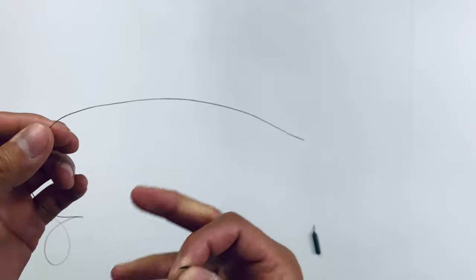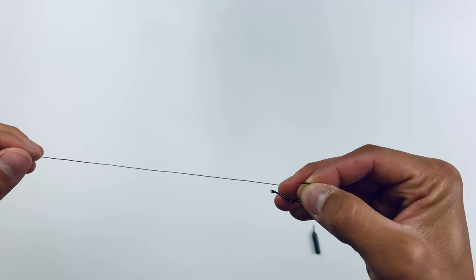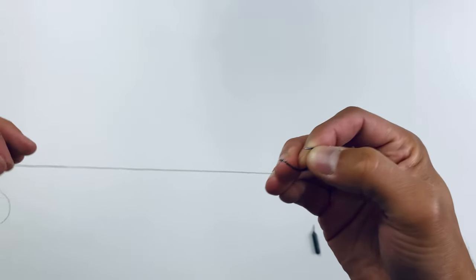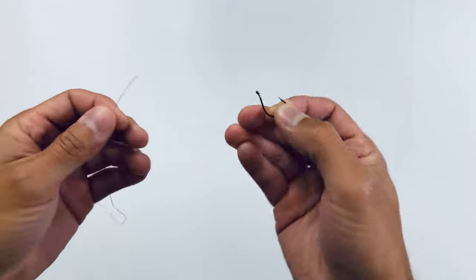So the first thing I'm going to go ahead and disclaimer, you normally want to use fluorocarbon or at least monofilament when doing a drop shot rig. I'm only using braid just for visibility reasons on this tutorial.